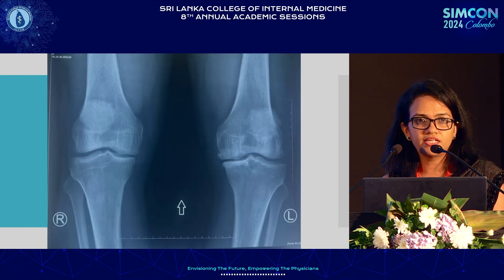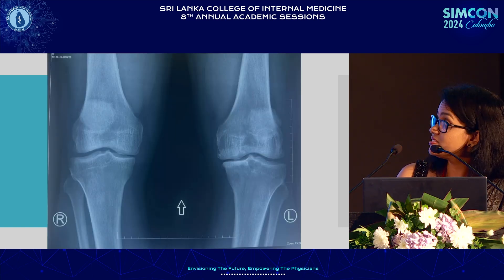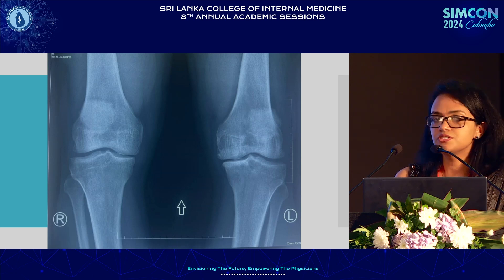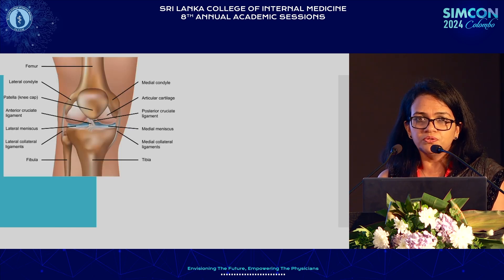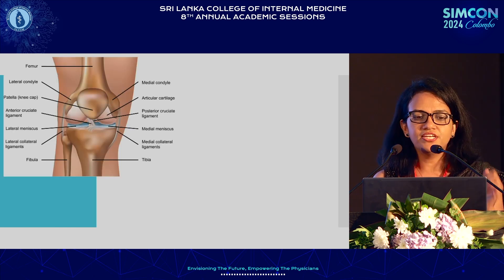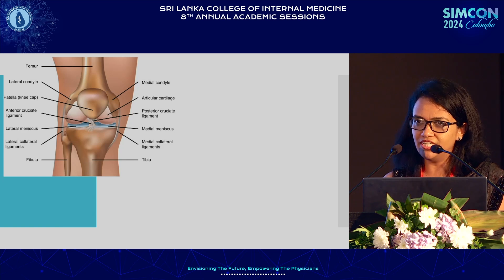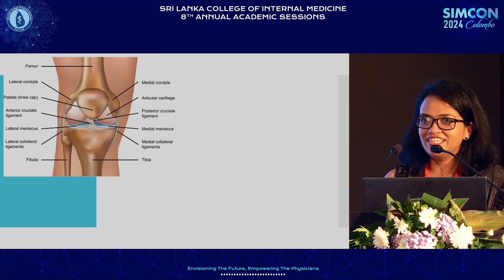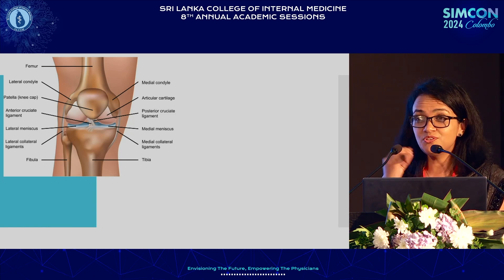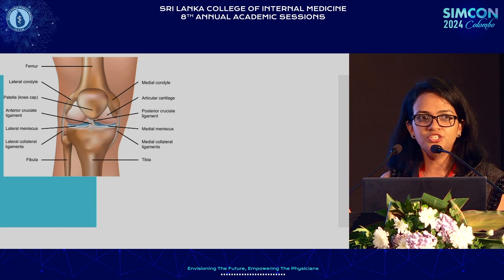This was the X-ray of the knees. As you can see, there is joint space narrowing with osteophyte formation and subchondral sclerosis — everything screams osteoarthritis. Before we move on to what happened with the patient, I will take you through the anatomy of the knee. This is the anatomy of the knee for an orthopedic surgeon, because they see the bone and the cartilage — that's all that comes to mind: bone, cartilage, and ligaments.